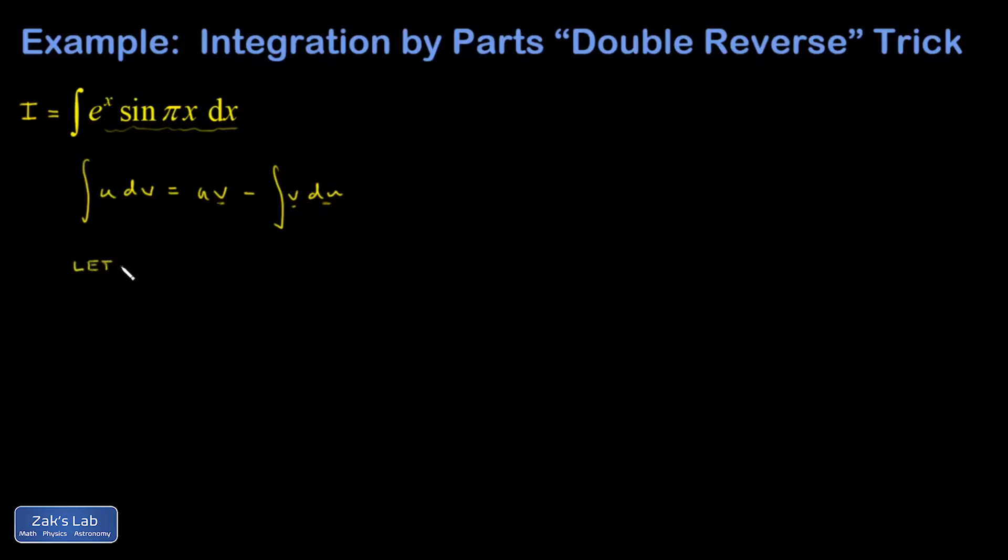So I'm going to let U be e^x, which means DU is e^x dx. I'm going to let DV be the other chunk of the integral, the part that I underlined, sine πx dx. So I've got to guess the anti-derivative of that. And this requires you to think about the chain rule backwards. It's a real hassle if you have to do an explicit substitution on that. So I would hope you're doing it by guessing and checking.